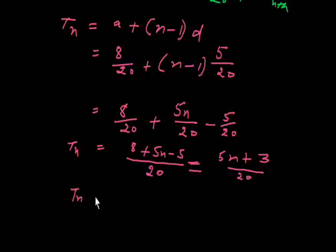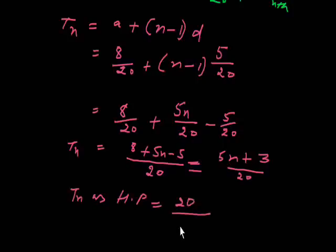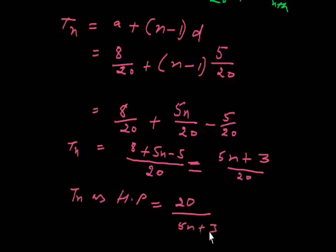So the nth term as per arithmetic progression is (5n plus 3) over 20. I will just invert this, so the nth term as per harmonic progression will be 20 divided by (5n plus 3). Thank you very much.